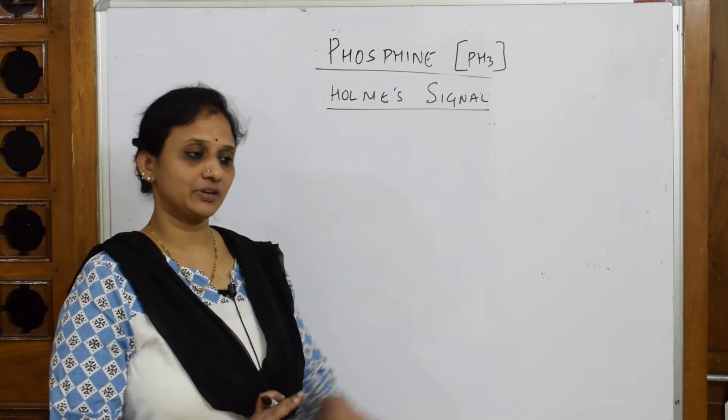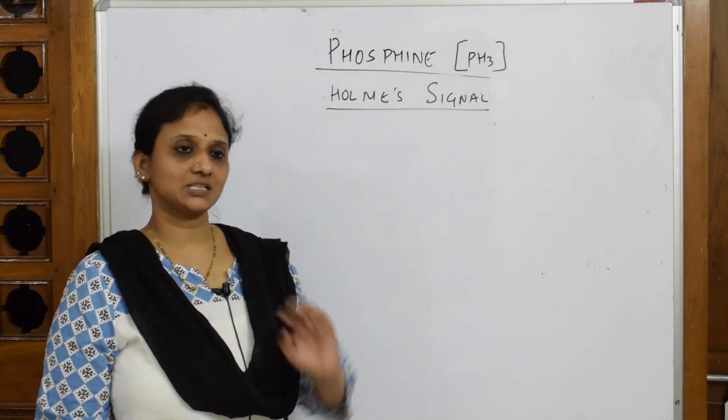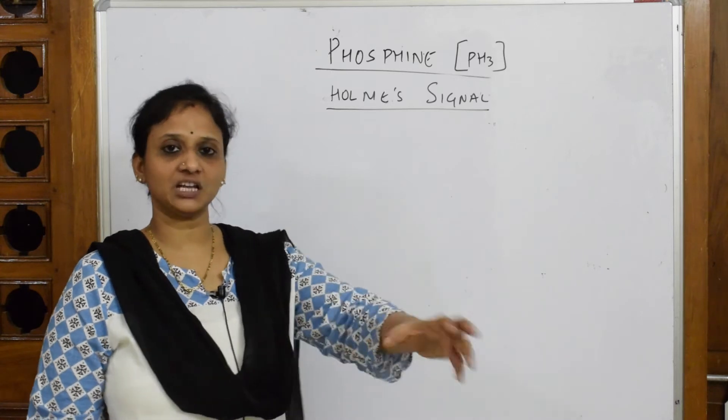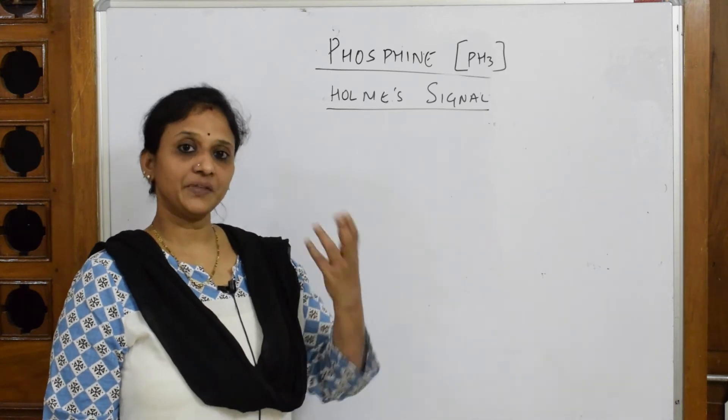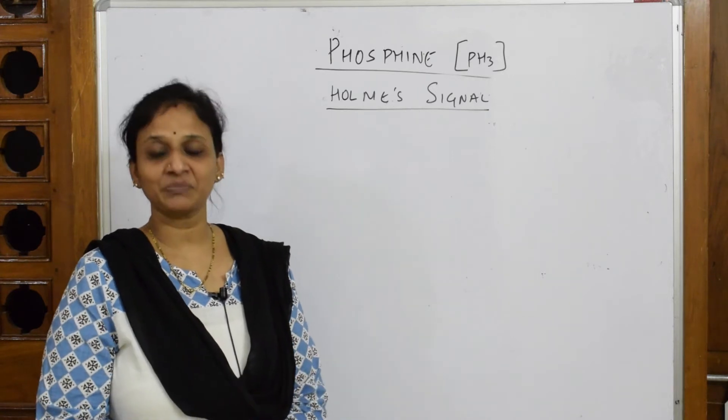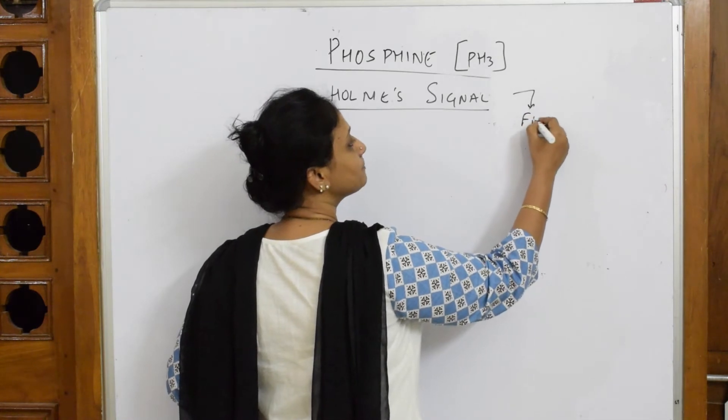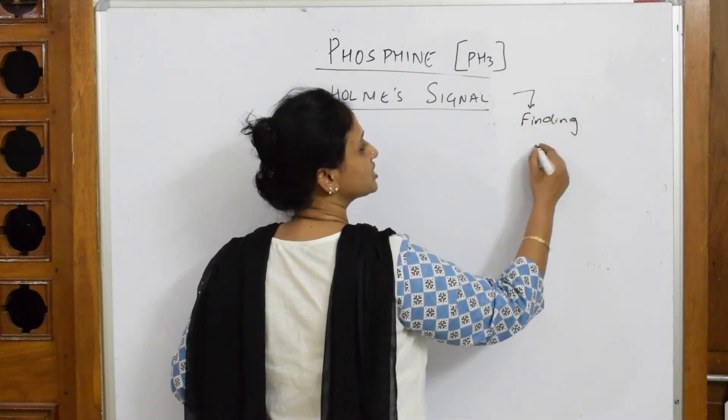Basically, whenever you're moving around the sea and it's completely dark, or you have to find the approaching ships, they're going to use this phosphine for producing that red light - that is your Holmes signal. So Holmes signal is used for finding approaching ships.